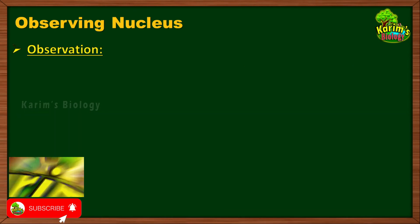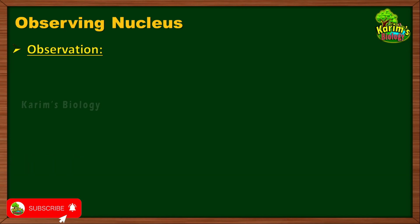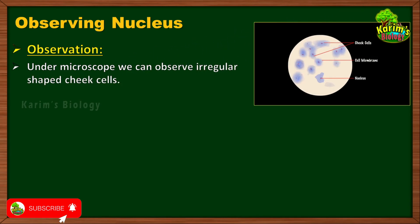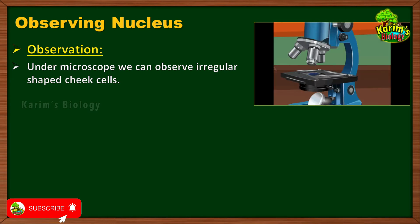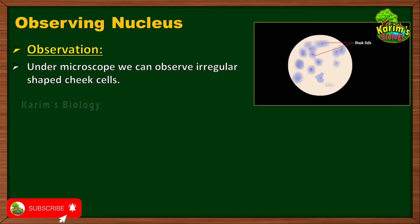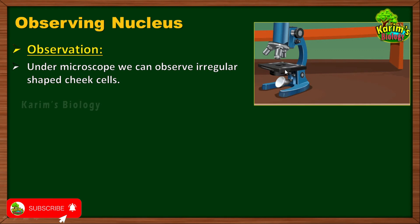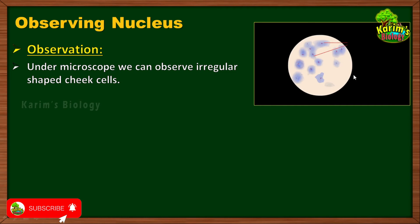Before placing the specimen under the microscope, add a little amount of glycerin to it. Without glycerin, within a few minutes the liquid part will evaporate and the specimen will become dry, making observation impossible. After adding glycerin, slowly place a cover slip on the specimen — this ensures the objective lens does not touch the specimen during focusing — and then observe it under the microscope.